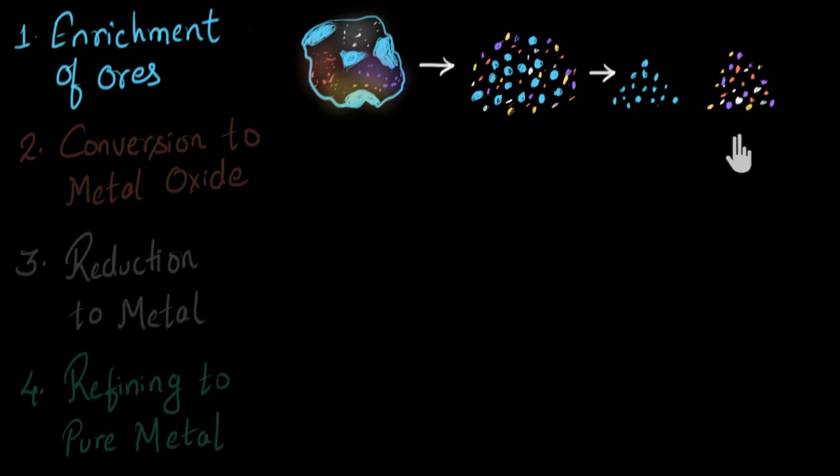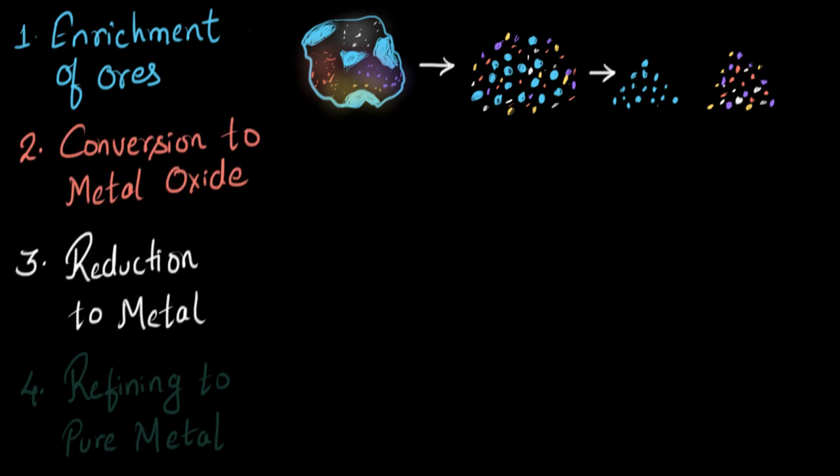Now in later videos, we will be talking about how to convert this metal compound into metal oxide. And then reduce the metal oxide to get the metal. And then refine the metal to get pure metal. Well, for now, let's summarize this video.